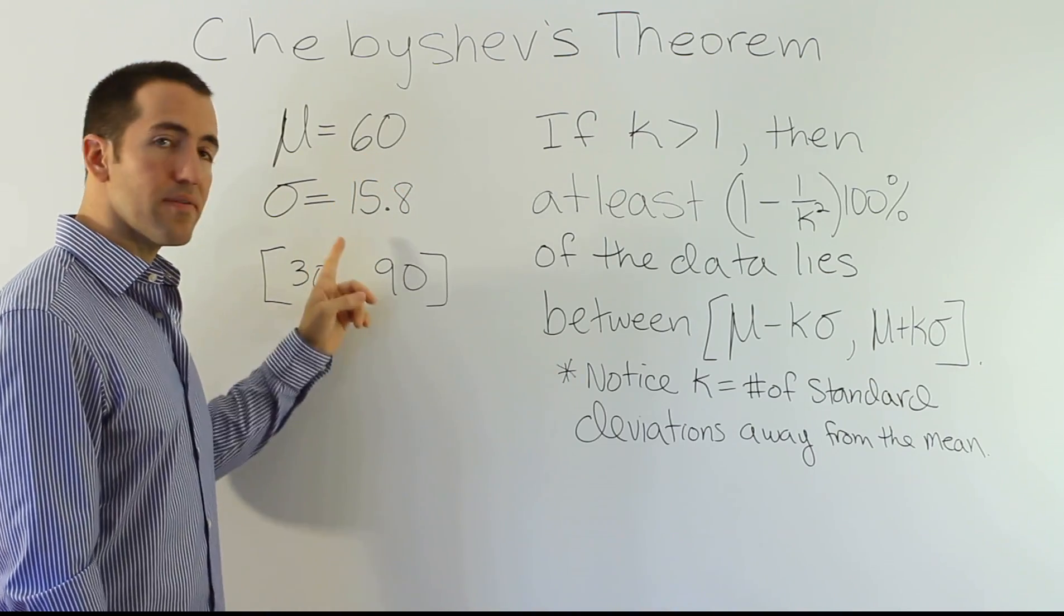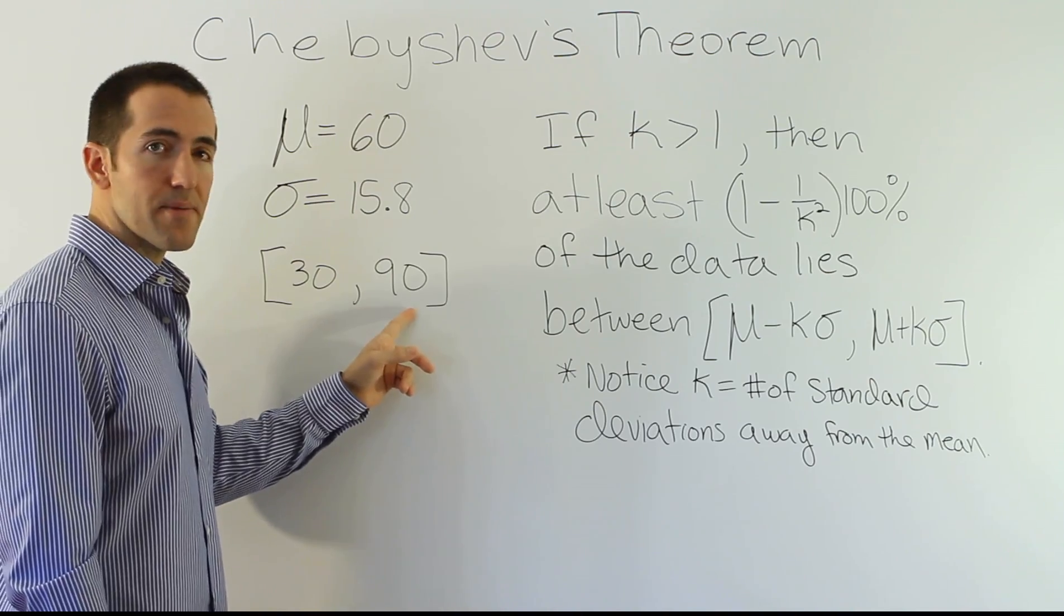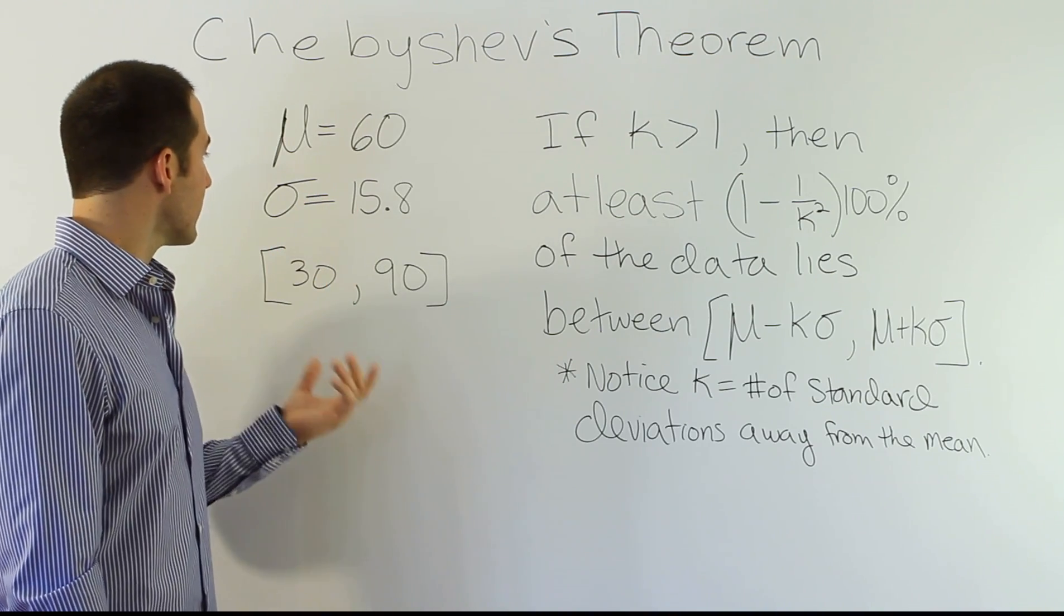We should say, well, here's the mean. Is it smack in the middle of the interval? I think it is, because the distance from 60 to 90 is 30. And the distance from 60 to 30 is 30, so that means the interval is symmetric around this mean of 60.